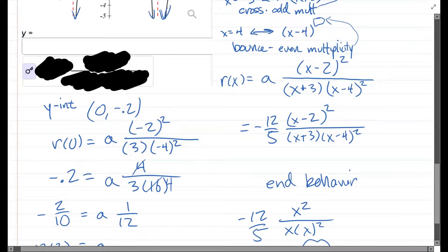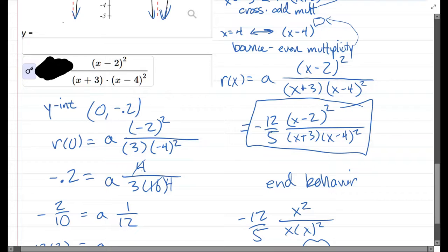Okay, so let's go ahead and see our numerator here: x minus two squared. That's great, that's what we got. This is our answer. We got two factors: x plus three, x minus four. And that x minus four is squared.